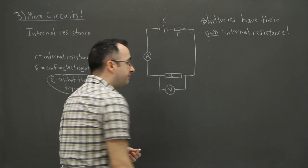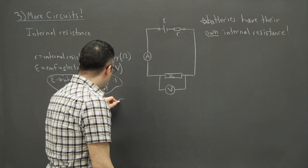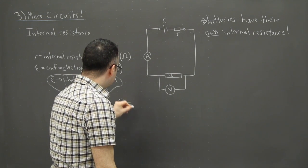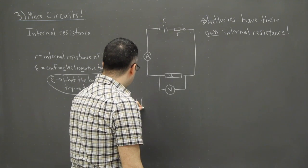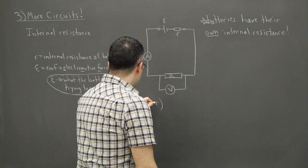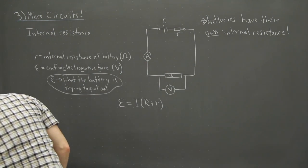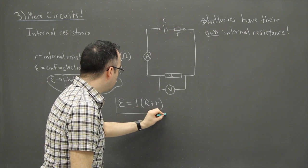We have equations governing this, and in your data booklet you get this one: EMF is equal to I times R plus r. This is actually on your data booklet.